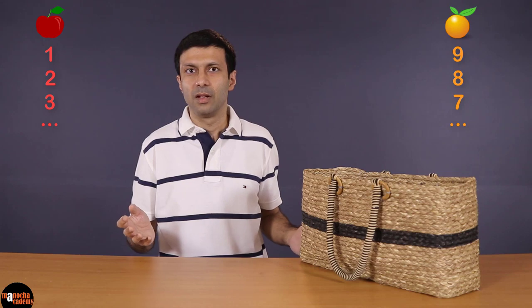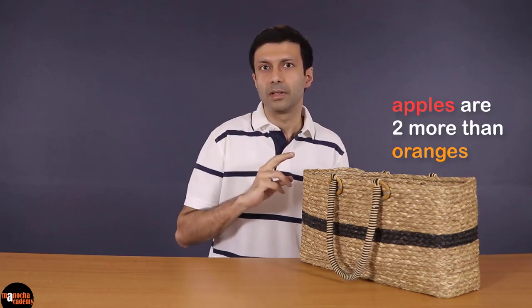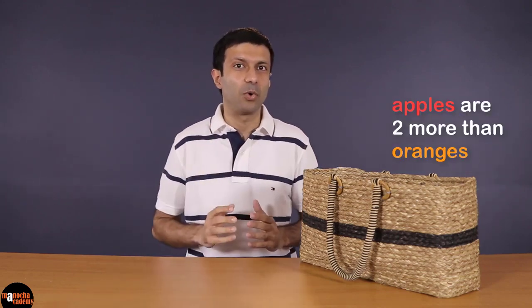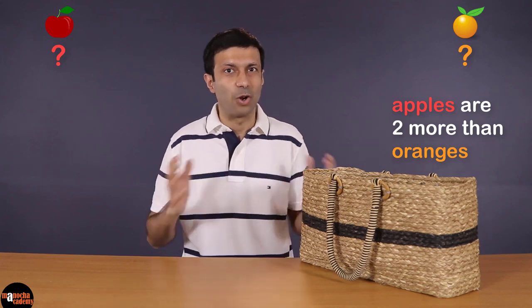Because it could be 1 apple, 9 oranges or 2 apples, 8 oranges or 3 apples, 7 oranges and so on. But if I give you some more information - if I tell you that there are 2 more apples than the number of oranges, now can you tell me what is the number of apples and oranges?